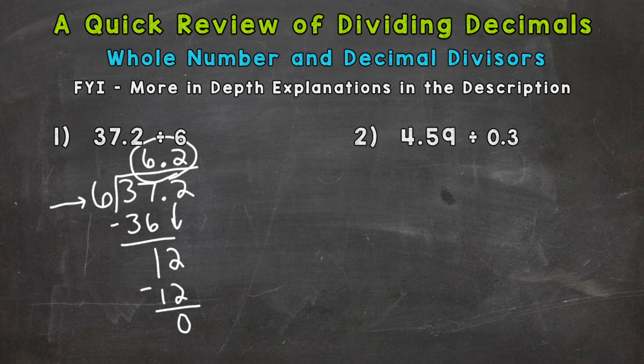Number 2: 4.59 divided by 0.3. Let's set it up: 4.59 is our dividend and 0.3 is our divisor. Again, the first thing we should look at is the divisor. Is it whole? No, it's not, so we can't start quite yet. Do not bring your decimal straight up if your divisor is not whole.